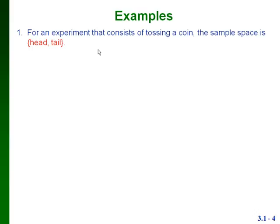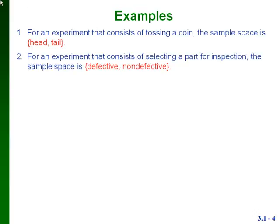Here are some examples of experiments and their outcomes. An experiment that consists of tossing a coin has a sample space of two possible outcomes: heads or tails. For an experiment that consists of selecting a part for inspection, we again have two possible outcomes — the part is either defective or not defective. That's our sample space.